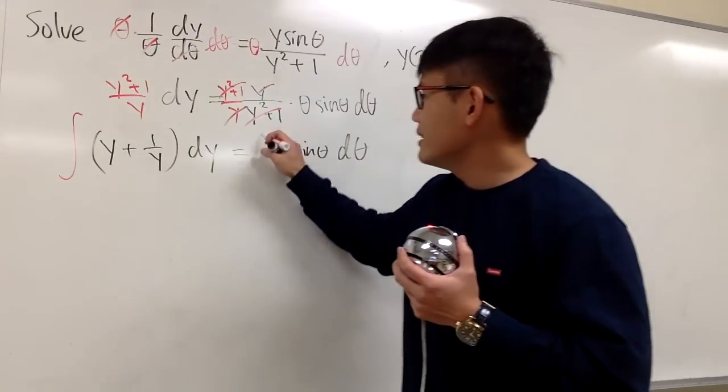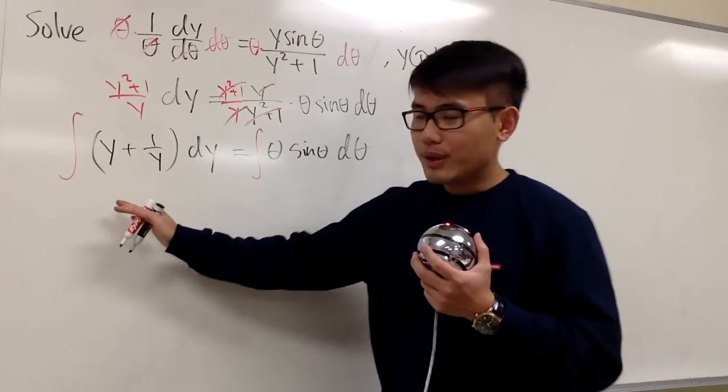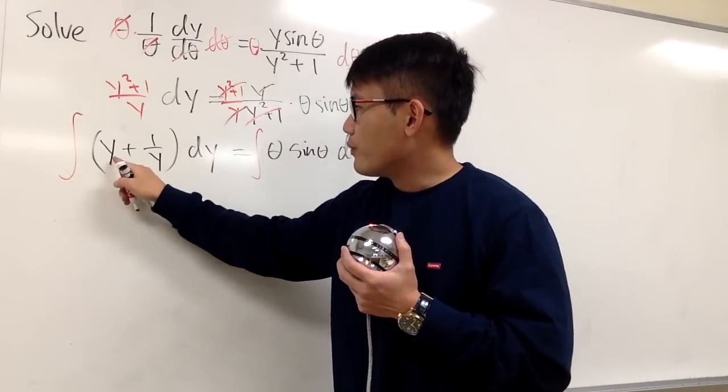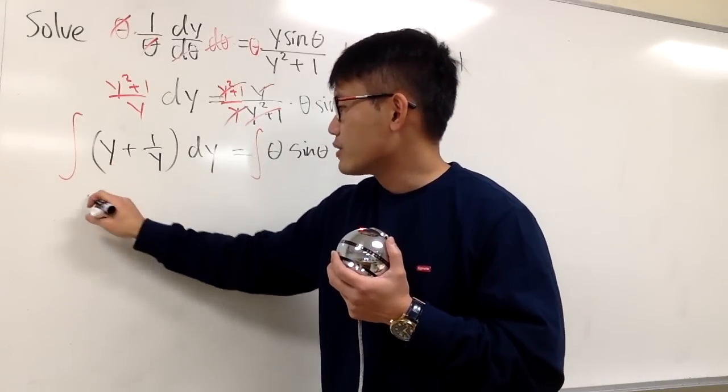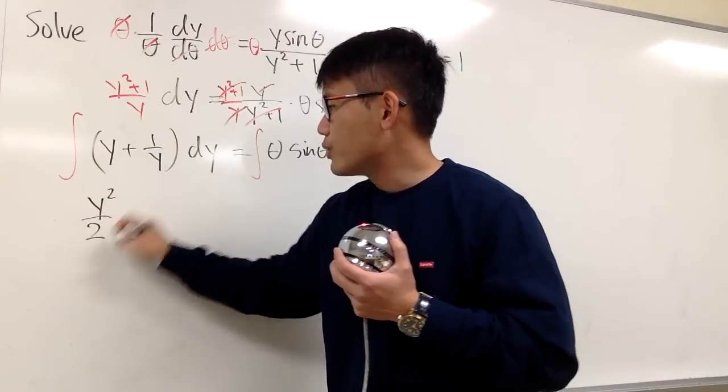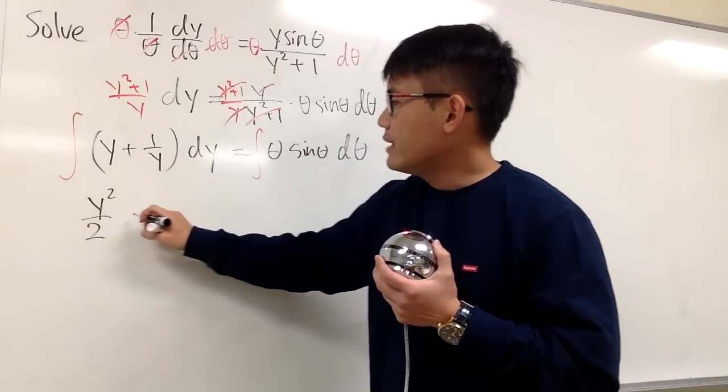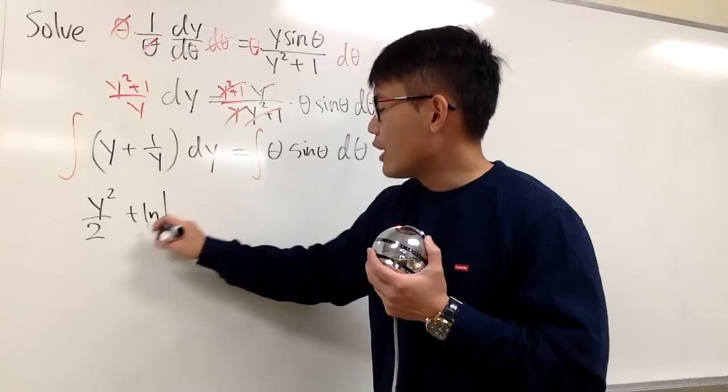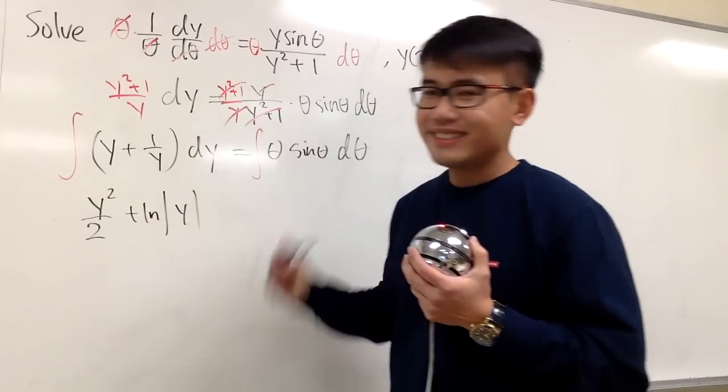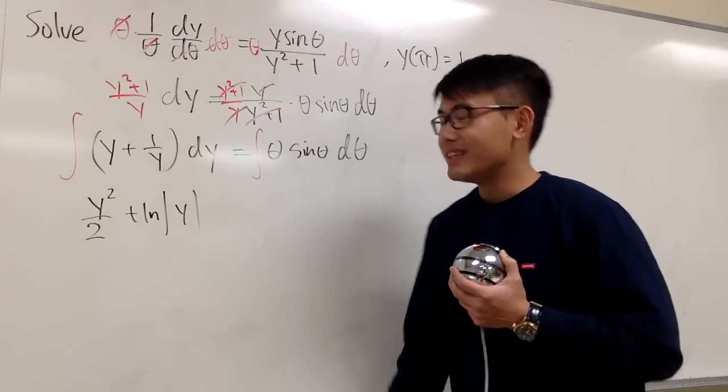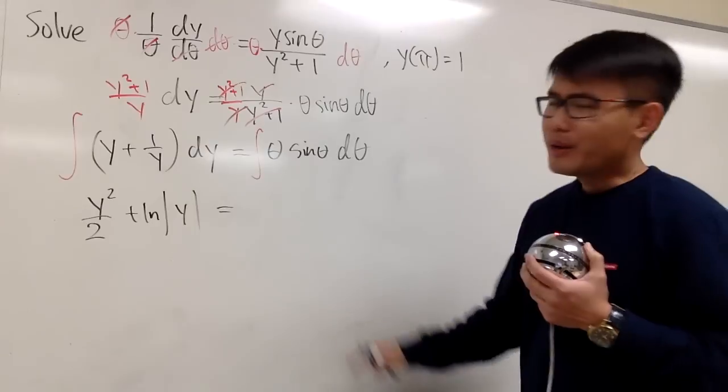Now, integrate, integrate. Let's do this first. Integral of y is just going to be 1 half y squared, so let me put this down as y squared over 2. And integral of 1 over y is plus absolute value, ln of absolute value of y, like this. Don't worry about the plus C. Let's do that on the right-hand side. How can we integrate theta times sine theta?